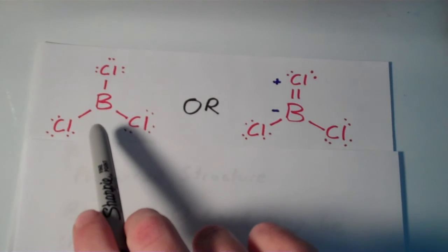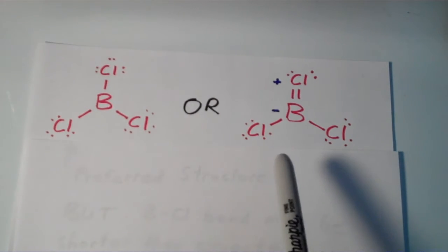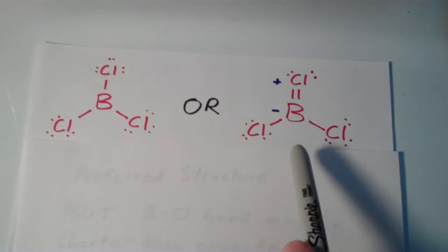In the structure on the left, boron has an incomplete octet. And in the structure on the right, boron has an octet.